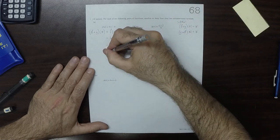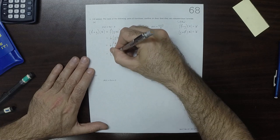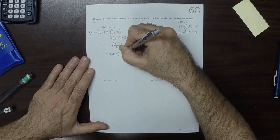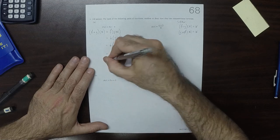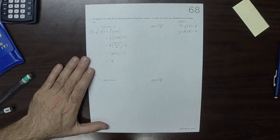The 6s cancel, the 3s cancel, so you get x.